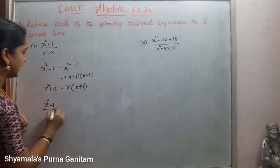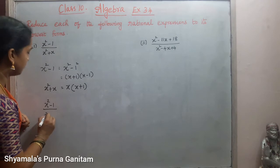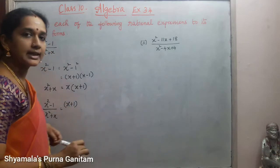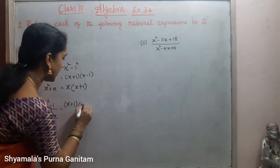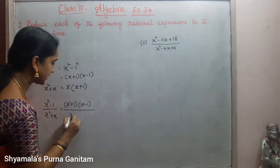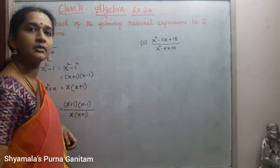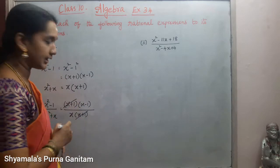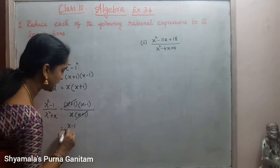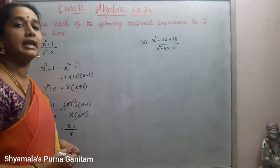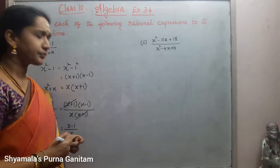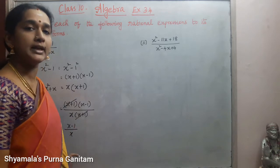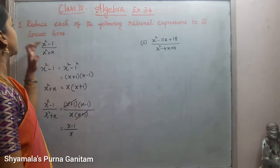Writing the question again: x squared minus 1 by x squared plus x equals x plus 1 into x minus 1 divided by x into x plus 1. Here x plus 1 cancels out, so the remaining terms are x minus 1 in the numerator and x in the denominator. There is nothing further to simplify, so the answer is x minus 1 by x. This is the lowest form for the given rational expression.